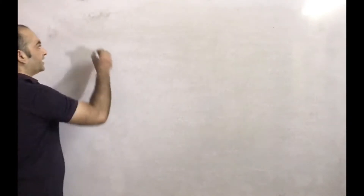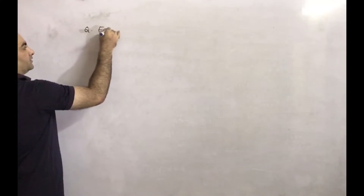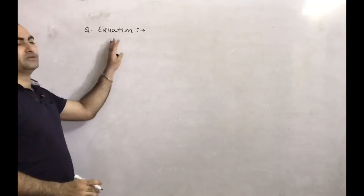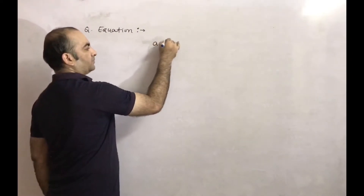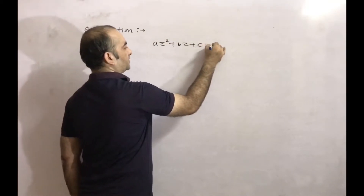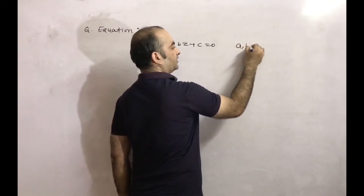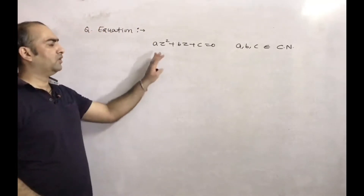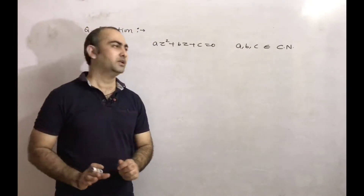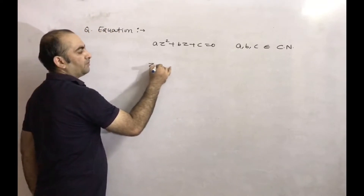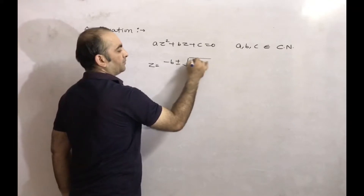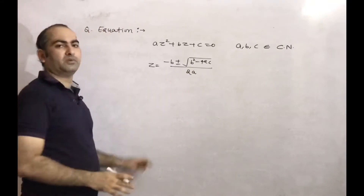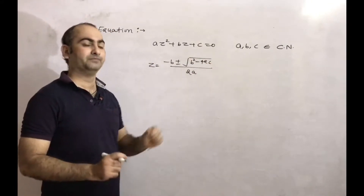Next we are discussing quadratic equations in complex numbers. A quadratic equation in complex numbers is: a*z² + b*z + c = 0, where a, b, c belong to the complex numbers. All the formulas of quadratic equations will be valid here. The roots of this equation are z = (-b ± √(b² - 4ac)) / 2a. Using this formula we can find the roots of this quadratic equation.